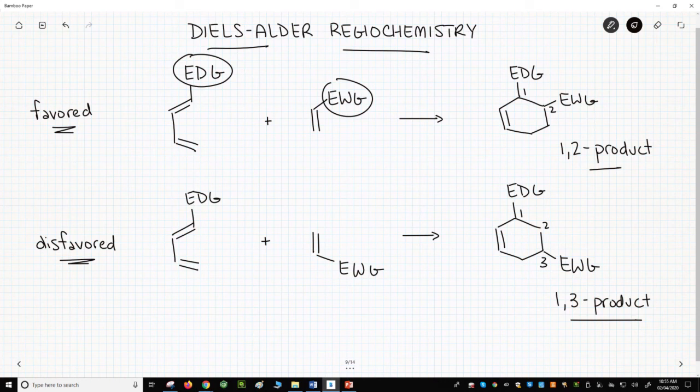The electron-donating group is electron-rich. What charge do we associate with electron-rich things? Negative. Let's put a minus next to our EDG. To be clear, this minus is not a formal charge. We're just keeping track of where electron density is high.